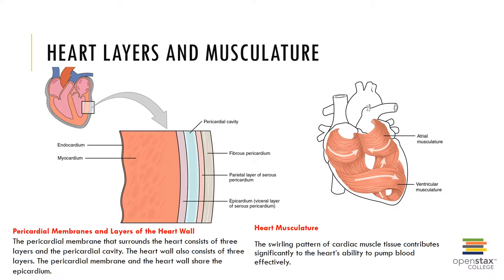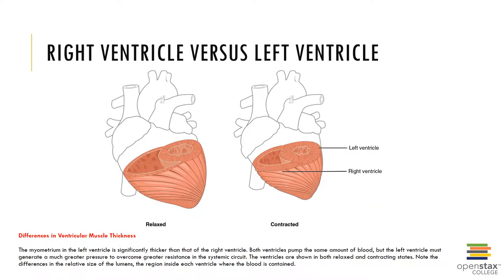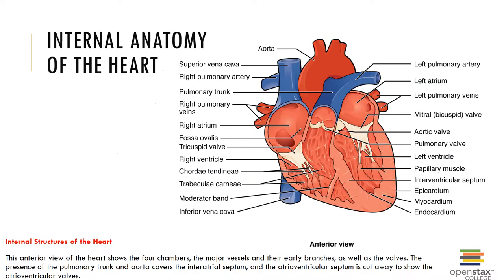Here you can see a different view of the muscle and heart layers previously discussed, noting the difference in ventricular muscle thickness between the right and left ventricles. The internal anatomy of the heart shows the fossa ovalis, pectinate muscles, trabeculae carneae, and the interventricular septum.